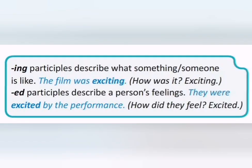ING participles describe what something or someone is like. For example, the film was exciting. How was it? Exciting. ED participles describe a person's feelings. For example, they were excited by their performance. How did they feel? Excited.